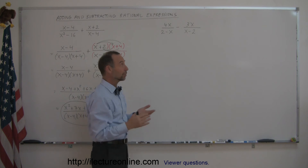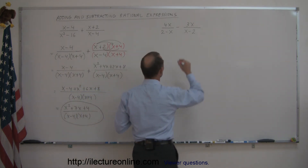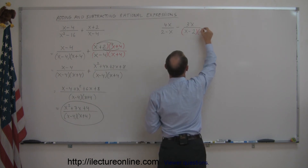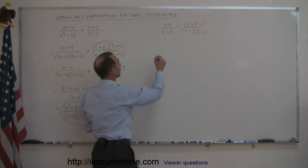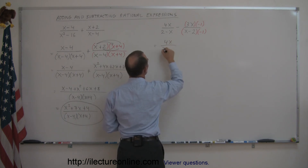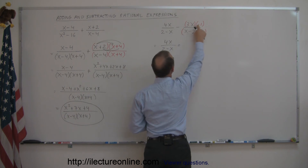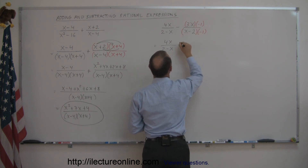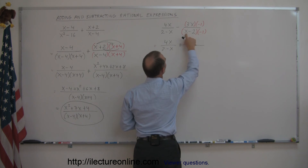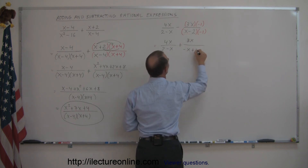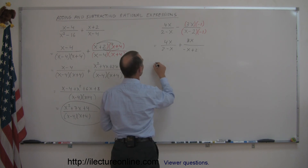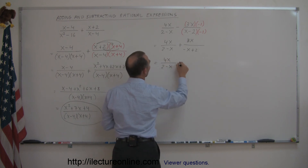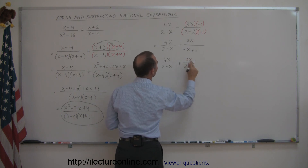Of course, if you do that to the denominator, you must do the same to the numerator. We're going to alter the second fraction by multiplying both the numerator and denominator by negative 1. So this becomes 4x over 2 minus x, plus negative 3x times negative 1 — which becomes positive 3x — divided by negative 1 times x equals negative x, and negative 1 times negative 2 equals plus 2. Now you actually have the same denominator, and simply switching those two around gives us 4x over 2 minus x, plus 3x over 2 minus x.